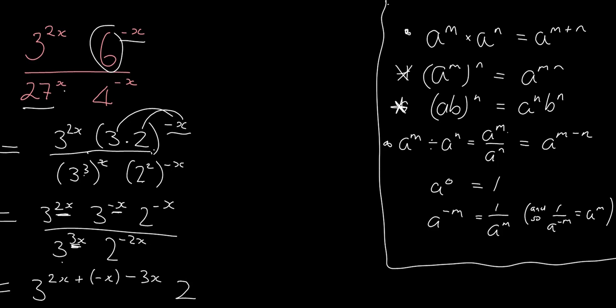And then I've got my 2s, and here I've got 2 to the minus x. And then I've got this at the bottom, so I'm dividing it by it, so I subtract it. And now I can simplify this nicely. 2x minus x is x, and x minus 3x is minus 2x. And here I'll have minus x plus 2x, which gives me x.